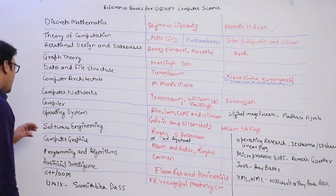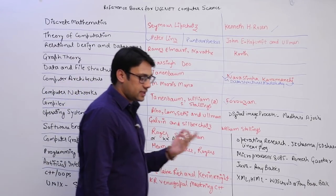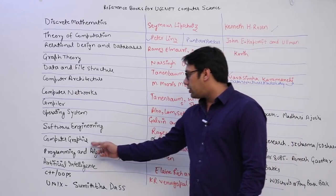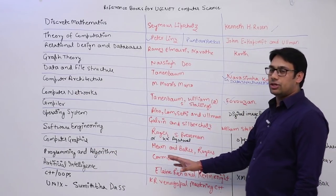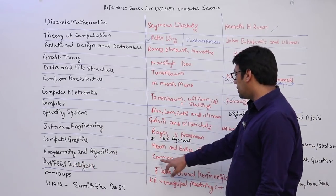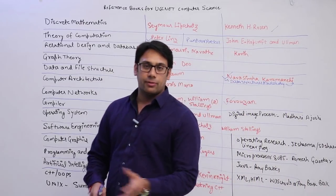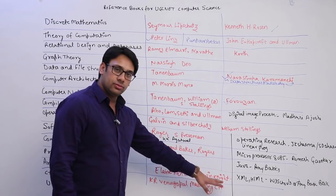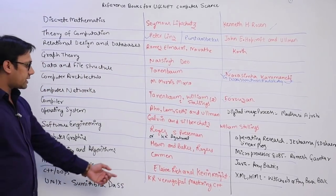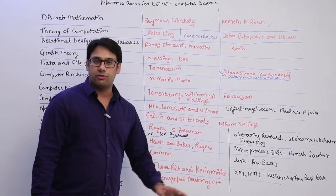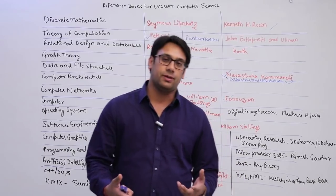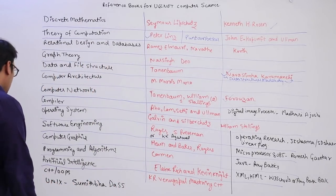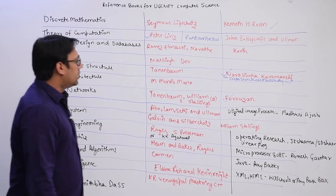For Software Engineering, Robert S. Pressman is the standard author book to refer; if you want a local author book, KK Agarwal is fine. For Computer Graphics, Hearn and Baker is the only book you need. For Programming and Algorithms, Cormen is the only book to refer — it is called the Bible of Computer Science and the Bible of Algorithms. For Artificial Intelligence, Kevin Knight is the book. For C++, KK Venugopal's 'Mastering C++' or any standard C++ book will do, as the questions asked are not very difficult.